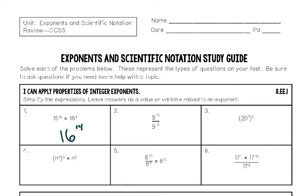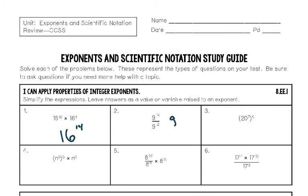Number two is an example of the quotient rule. I have the base G to the 19th power being divided by G to the 12th power. On your yellow reference sheet you have an example of the quotient rule: when the same base is being divided, you subtract the exponents. You could write out the G's and they would cancel. Since there are more G's on top, we keep the answer on top: 19 minus 12 is 7, so G to the seventh power is your final answer.